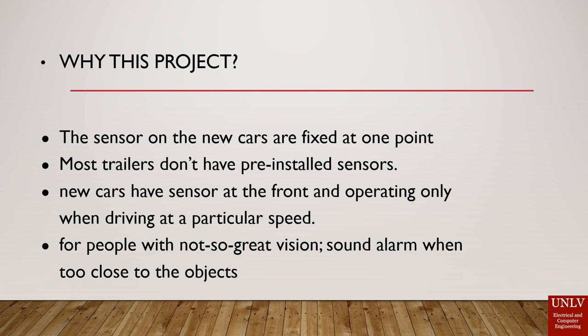Some cars have sensors that can only operate at a certain speed — below that speed they cannot operate. Having these kinds of sensors can give drivers more information about their surrounding areas. Additionally, having a sound alarm is helpful for people with not-so-great vision. Even though there's a camera inside the sensor box, a sound alarm can let them know if they're close to another vehicle or an object.